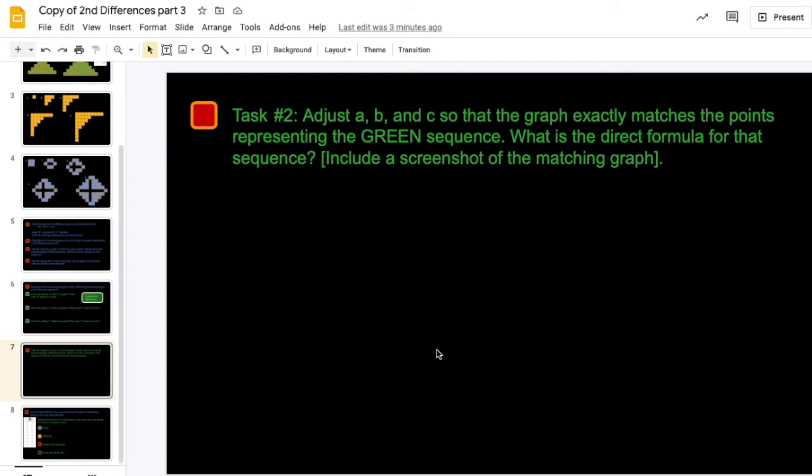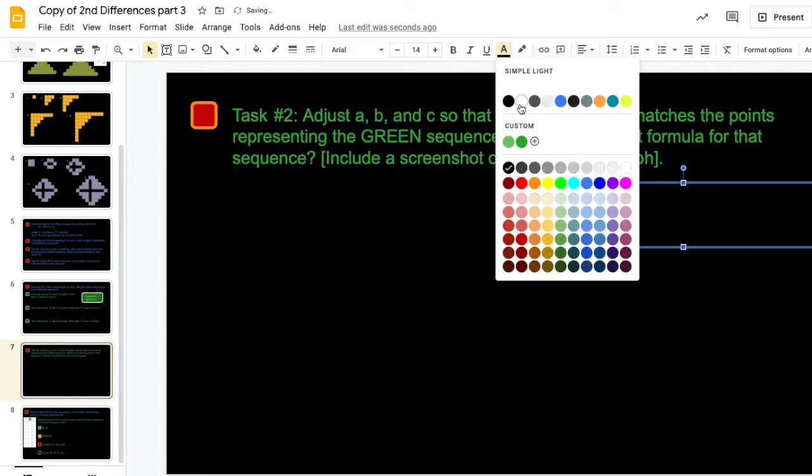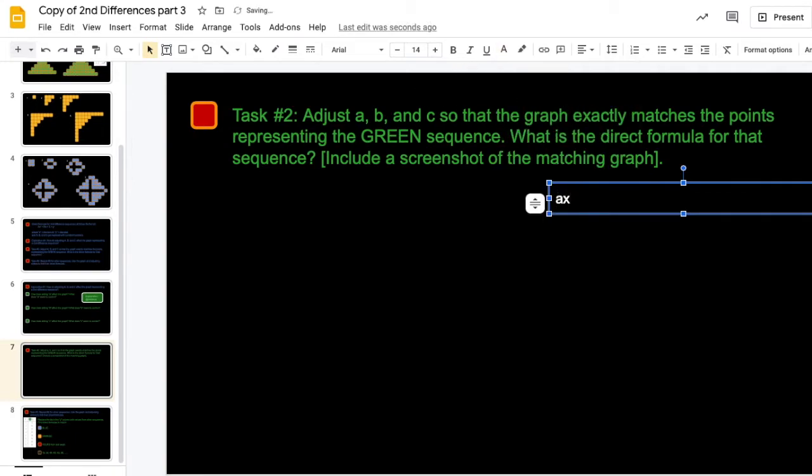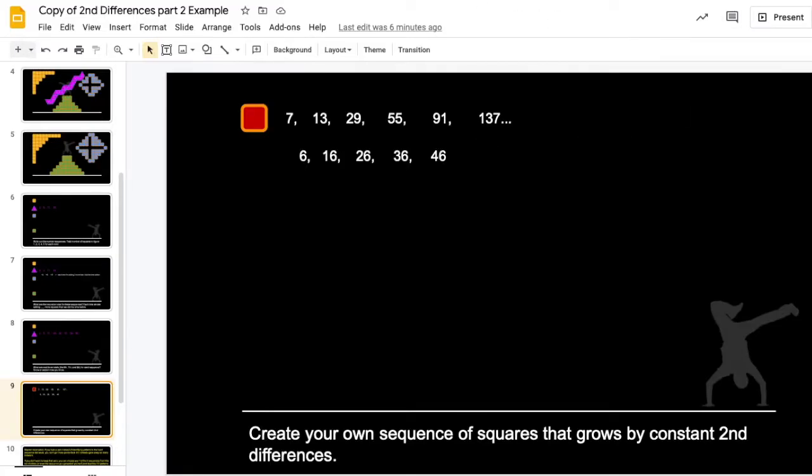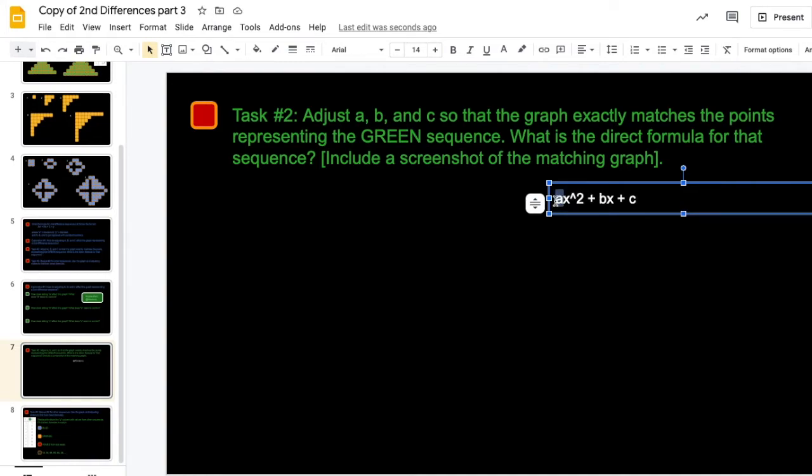All right, so you're going to have a picture of your graph here, and you're also going to put the equation for that sequence. The direct formula is ax squared plus bx plus c, but you're going to replace a, b, and c with these numbers. All right, what the numbers that you come up with to perfectly align with your green dots? 5, negative 9, 11. So mine is going to look like 5x squared minus 9x plus 11. Okay, so you'll have a picture and an equation to go with that picture.